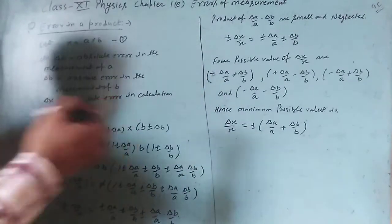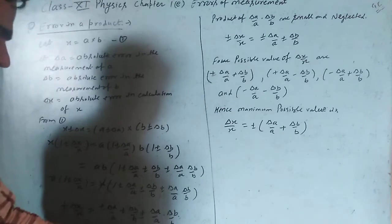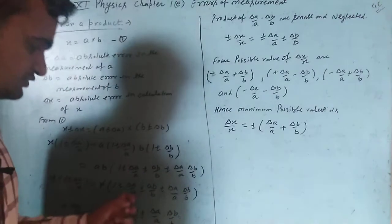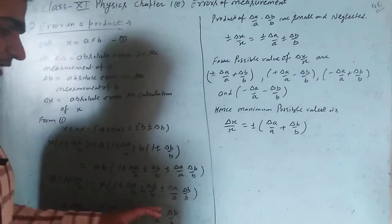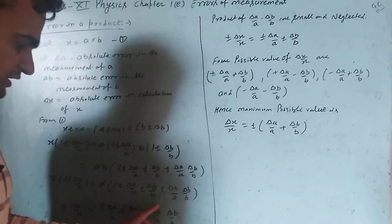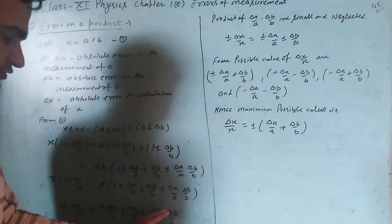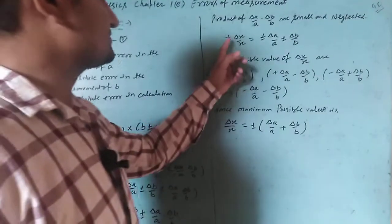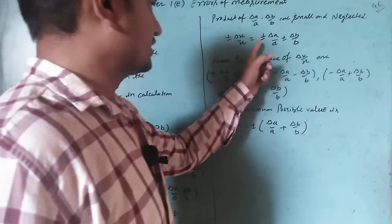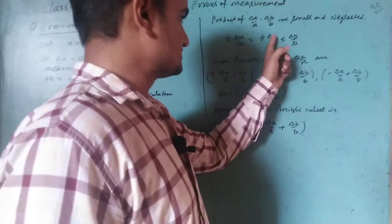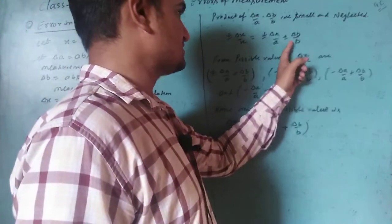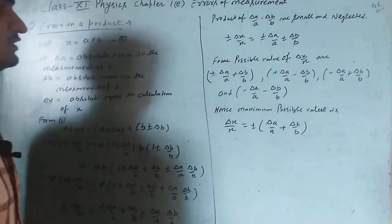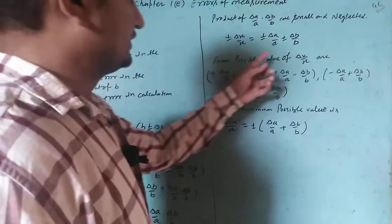The product of (delta a upon a) and (delta b upon b) is very small and can be neglected. Therefore, the main result is: plus minus delta x upon x equals plus minus delta a upon a plus minus delta b upon b. This is the maximum possible relative error in the product.